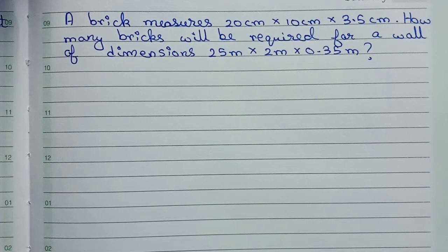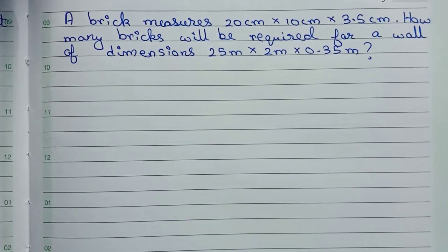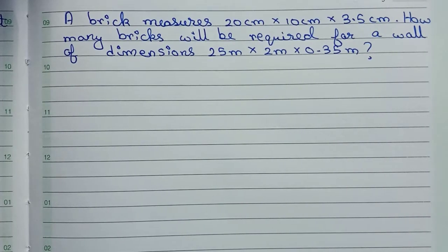Hello guys, welcome to this video. In this video, our question is: A brick measures 20 cm × 10 cm × 3.5 cm. How many bricks will be required for a wall of dimensions 25 m × 2 m × 0.35 m?